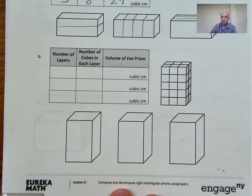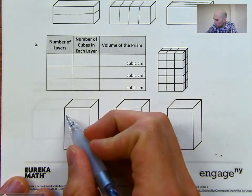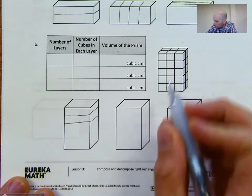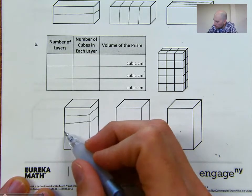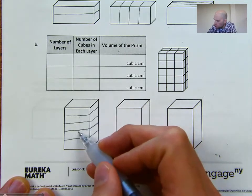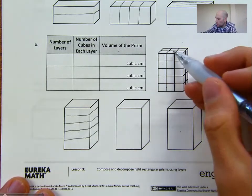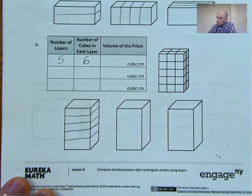So let's try that again for letter B down here. We have a different prism, and we have three different ways we can split this one up as well. The first way is like we did in the first one — we have kind of a wedding cake type layering. We have 5 layers. Each one of those layers has 6 cubes in it. So we have 5 layers of 6 cubes. Then we need to do 5 times 6, and 5 times 6 will give us 30 cubic centimeters.